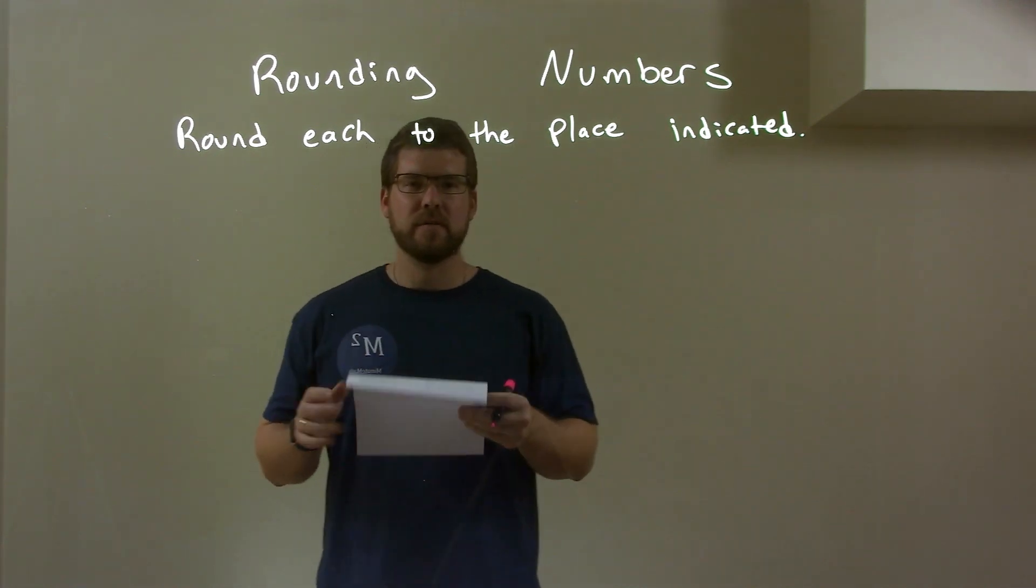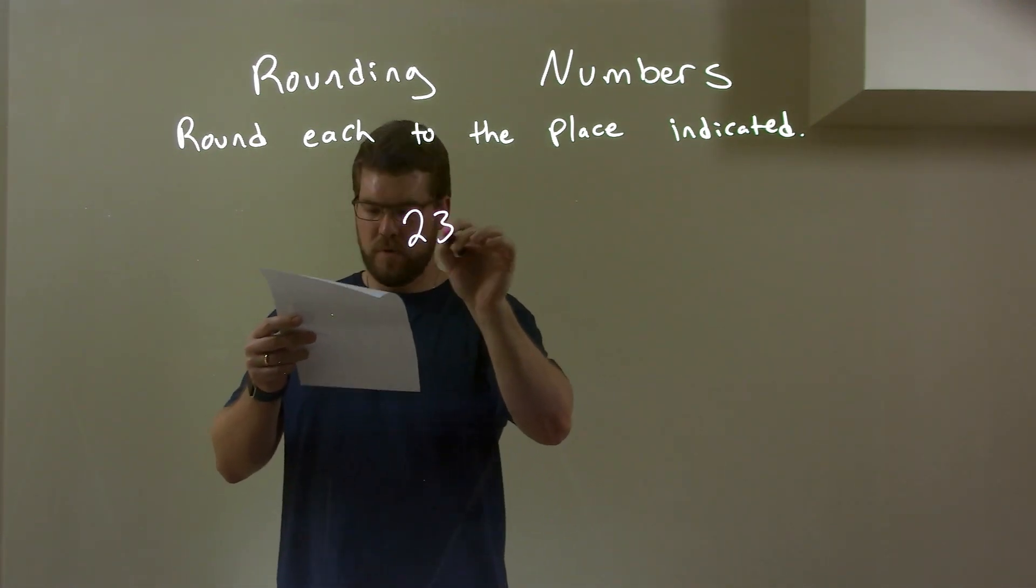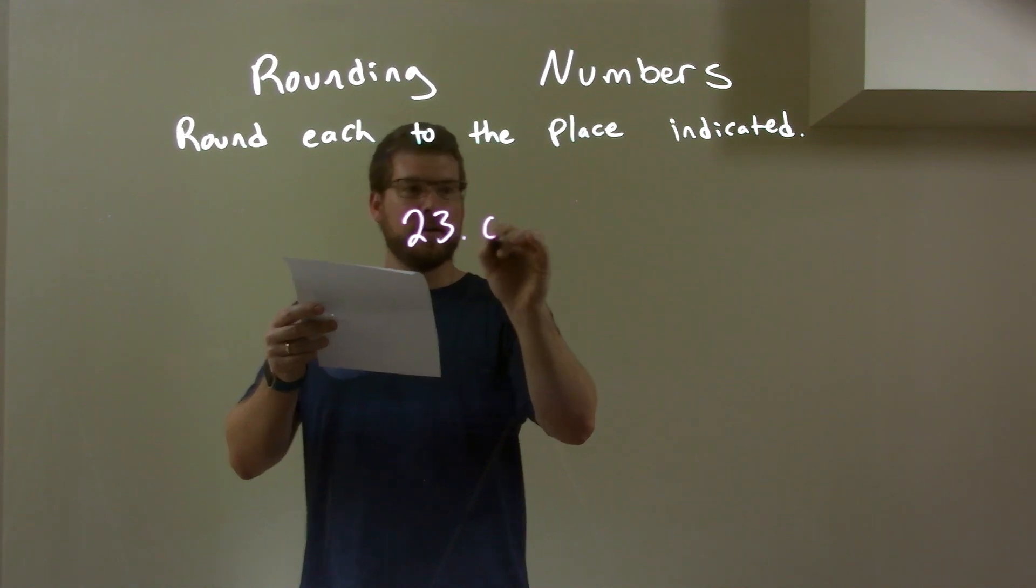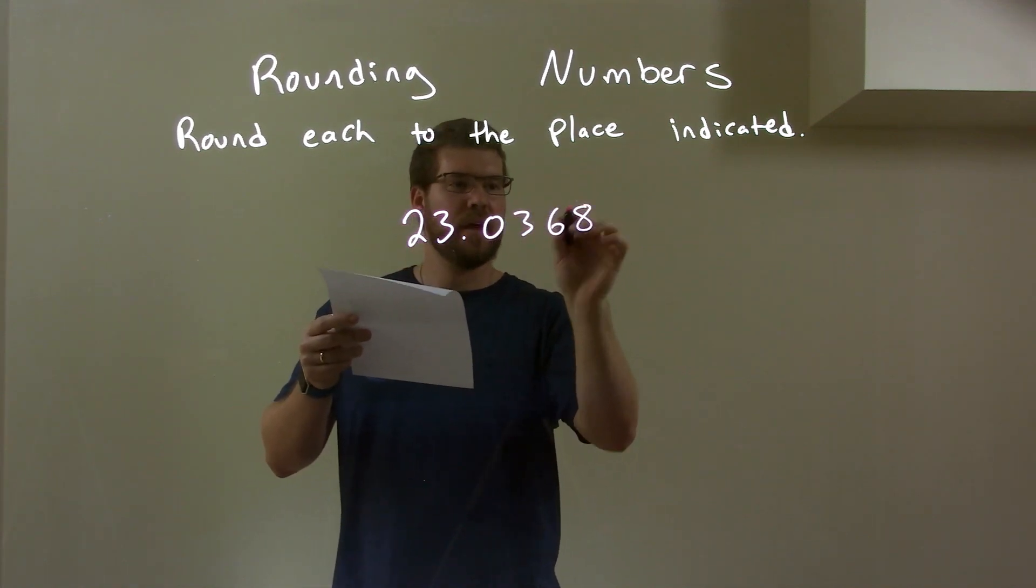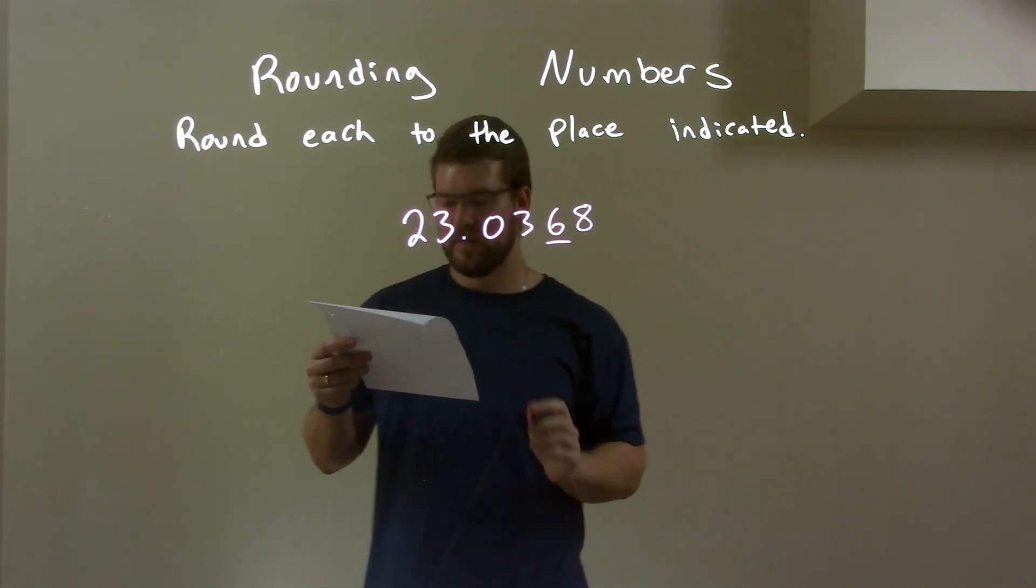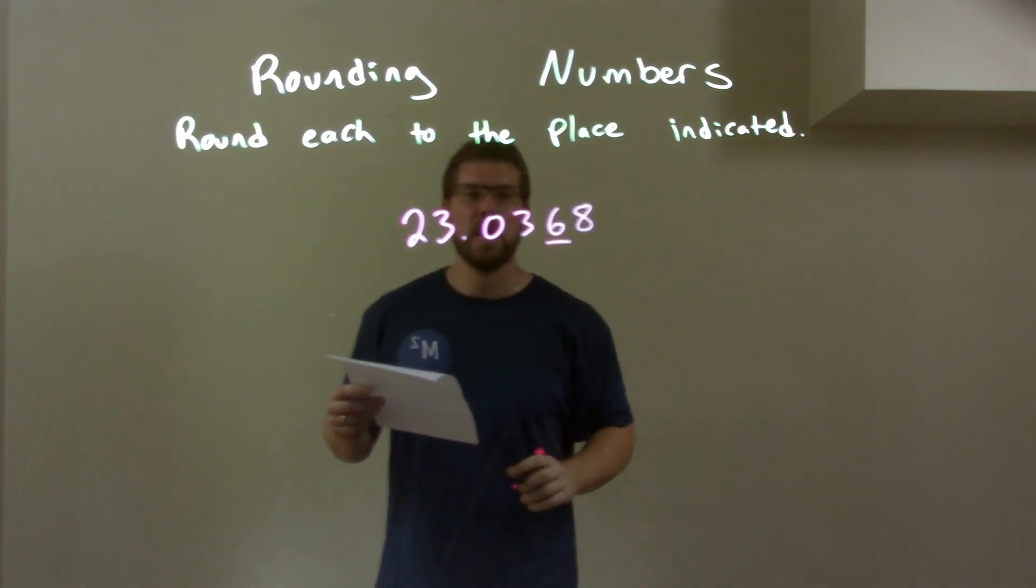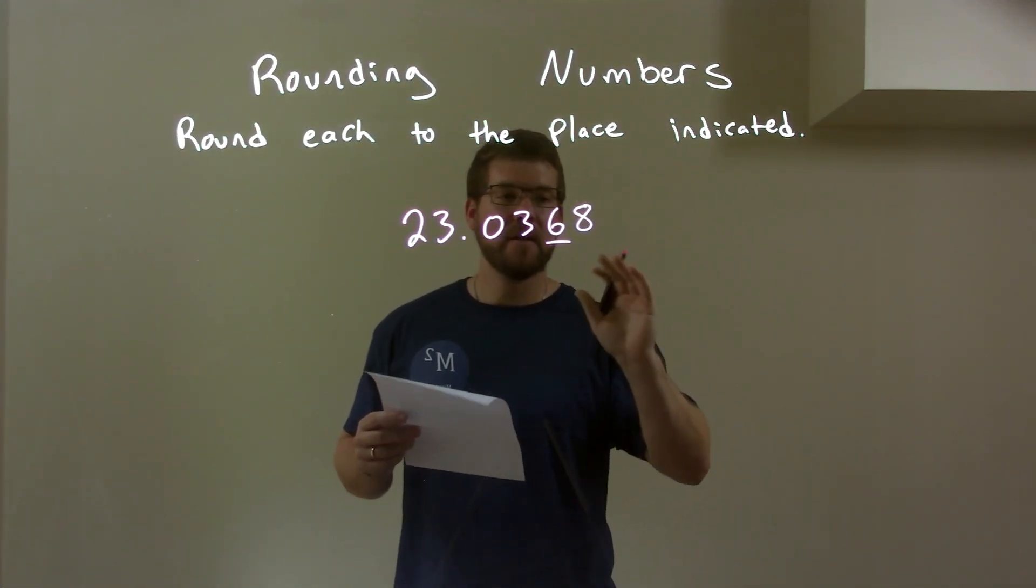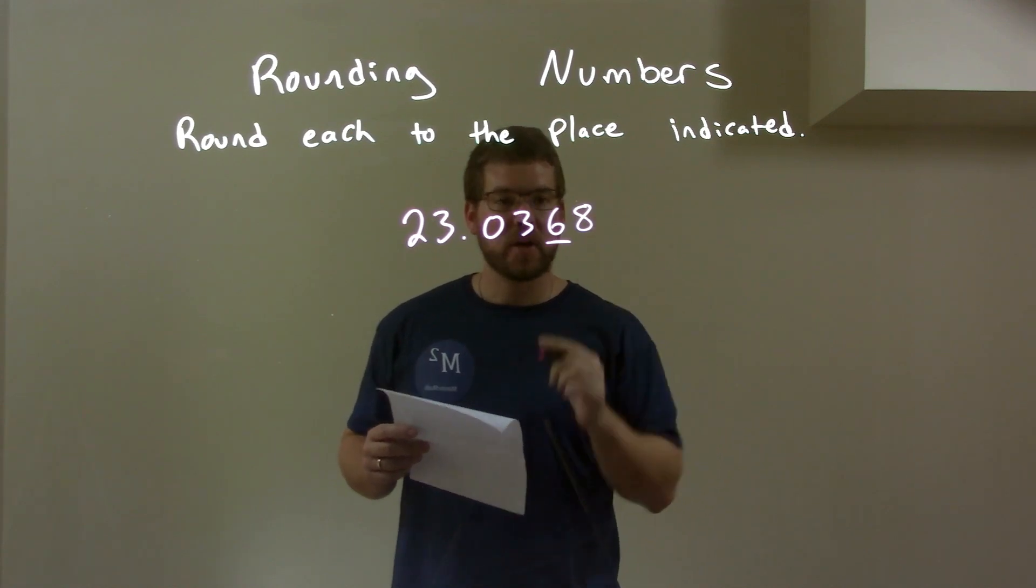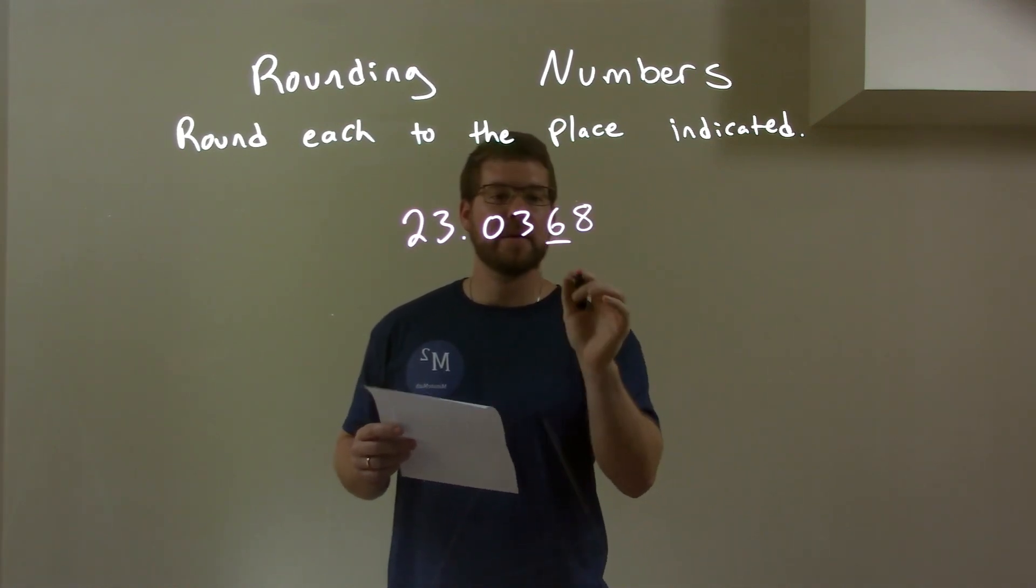So, if I was given this number, 23.0368, and I'm rounding on this 6 right there, okay? I look to the right of the 6, I see the 8. 8 is between 5 and 9. That causes the 6 to round up to the 7.